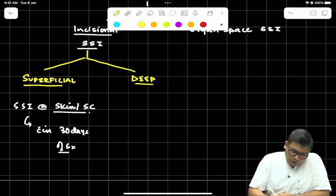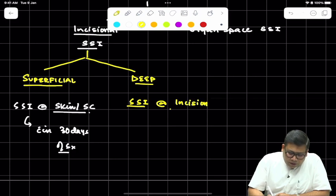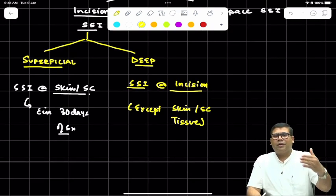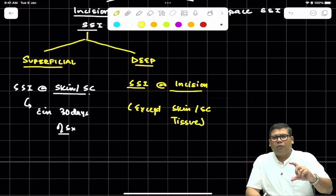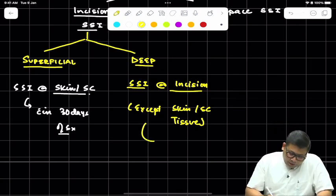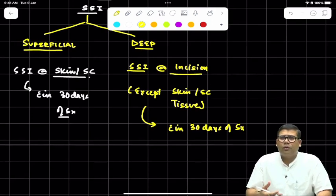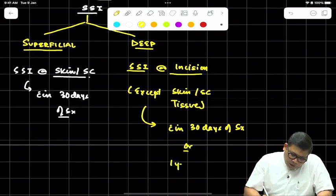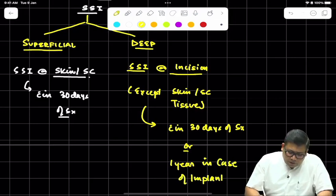When we talk about deep incisional SSI, this is SSI along the incision except the skin and subcutaneous tissue. The logic is that it might not be just restricted to skin and subcutaneous tissue—it is involving the deeper part of the incision. What is the time window? Within 30 days of surgery, and there are places where you need to put implants, so one year in case of implants.